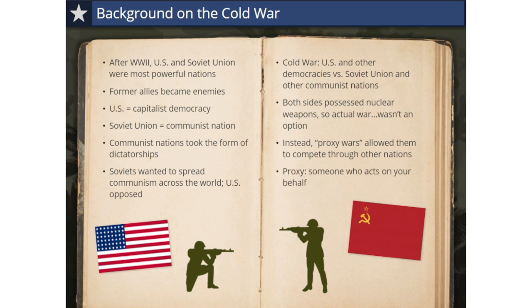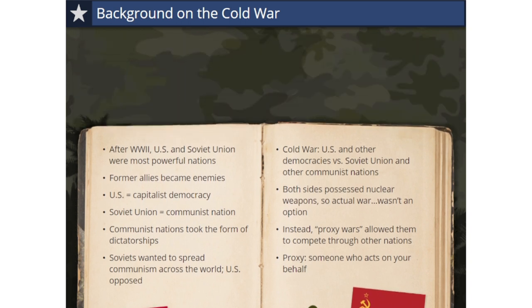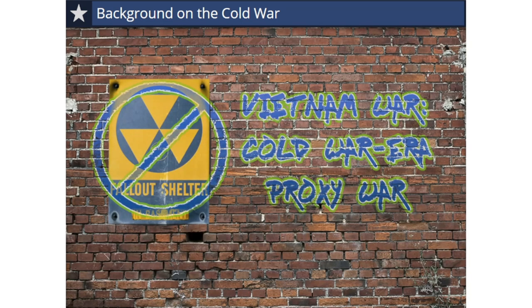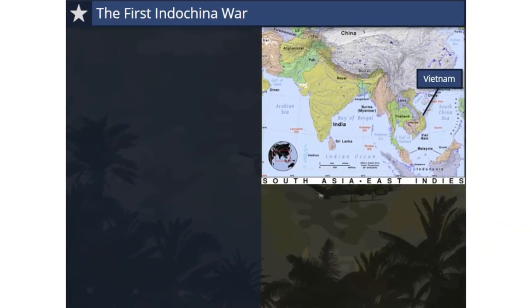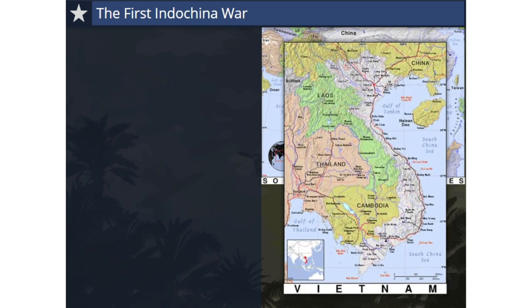What they did do was square off in a series of smaller proxy wars involving other nations. A proxy is someone else who acts on your behalf. These conflicts allowed the two enemies to oppose each other while never using nuclear weapons. The Vietnam War is a Cold War-era proxy war. Vietnam is a long, narrow country located in Southeast Asia, in a region called Indochina.